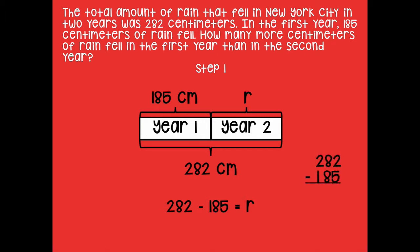All right, here we go. I'm going to rewrite this vertically because solving horizontally is trickier for me. Subtracting in the ones place: 2 minus 6 — I can't do it, so I need to decompose a ten. That gives me 7 tens and 12 ones. 12 minus 5 is 7. Then in the tens place, 7 minus 8 — I can't do that, so I decompose a hundred into 10 tens, giving me 17 tens. 17 tens minus 8 tens is 9 tens, and 100 minus 100 leaves 0. So R equals 97 centimeters.